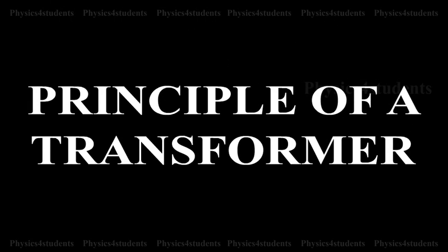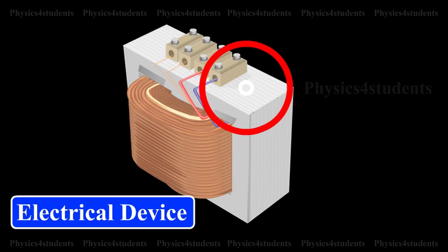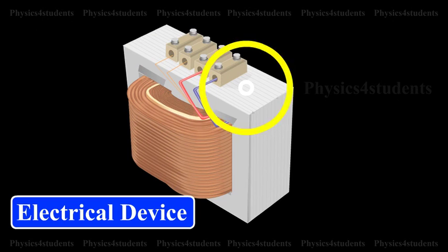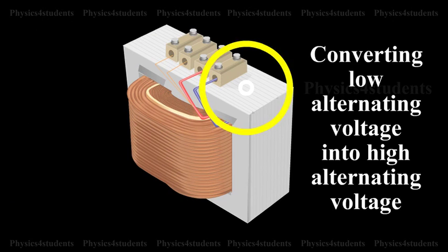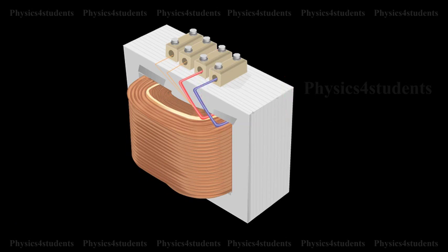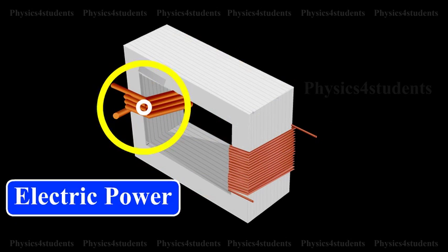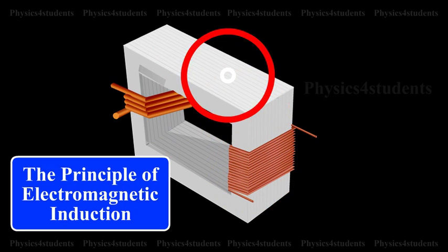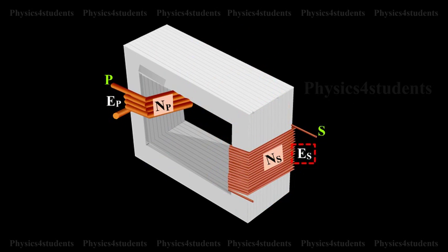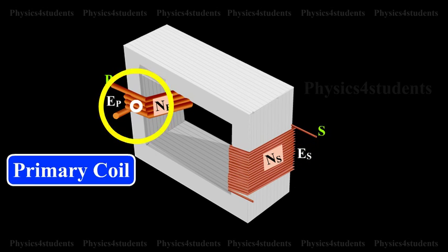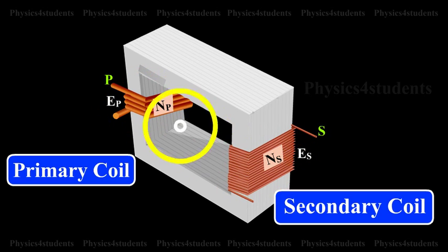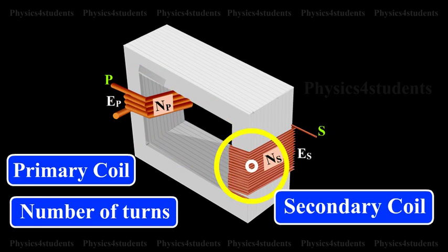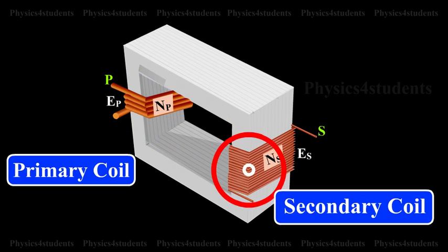Principle of Transformers. A transformer is an electric device used for converting low alternating voltage into high alternating voltage and vice versa. It transfers electric power from one circuit to another. The transformer is based on the principle of electromagnetic induction. Let EP and ES be the induced EMF in the primary and secondary coils, and NP and NS be the number of turns in the primary and secondary coils respectively.